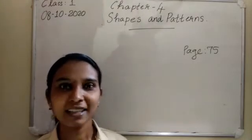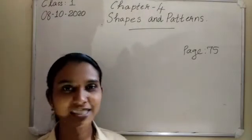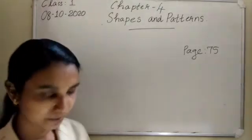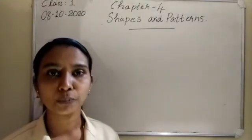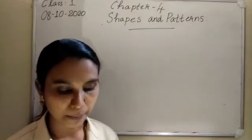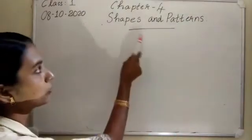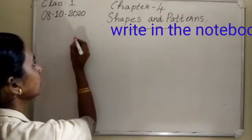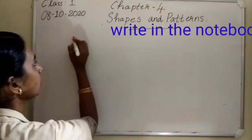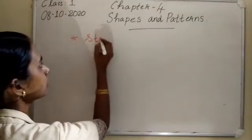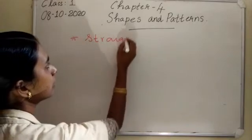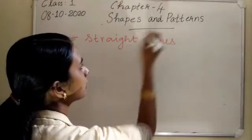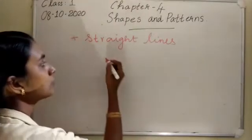If I roll this one, I will get a curved line. Take your notebook and write chapter heading: Chapter 4, Shapes and Patterns. The first topic is straight lines - draw some straight lines.